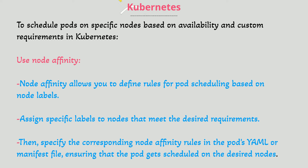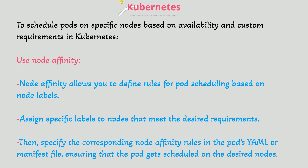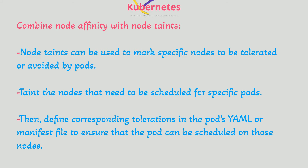Use Node Affinity. Node Affinity allows you to define rules for pod scheduling based on node labels. Assign specific labels to nodes that meet the desired requirements. Then, specify the corresponding Node Affinity rules in the pod's YAML or manifest file, ensuring that the pod gets scheduled on the desired nodes.